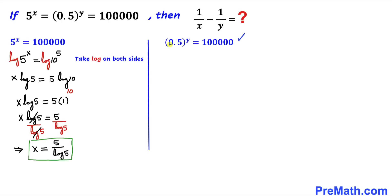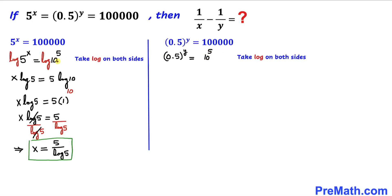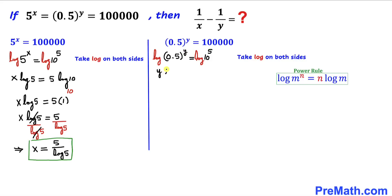Now let's focus on the next equation: 0.5 power y equals 100,000. Once again, 100,000 can be written as 10 power 5. So this equation becomes 0.5 power y equals 10 power 5. Taking a log on both sides and applying the power rule, this y exponent goes to the front and the 5 goes to the front as well. So we can write: y times log of 0.5 equals 5 times log of 10.